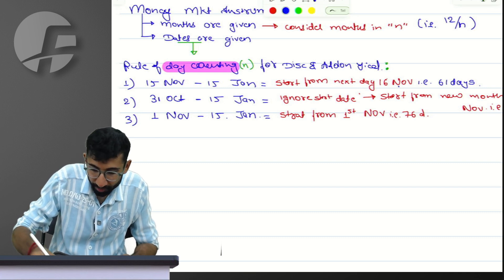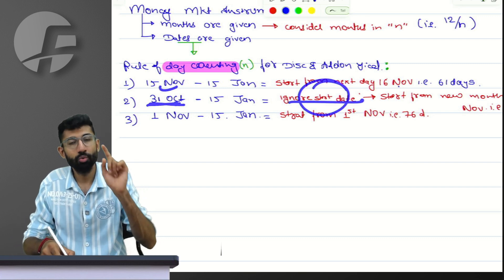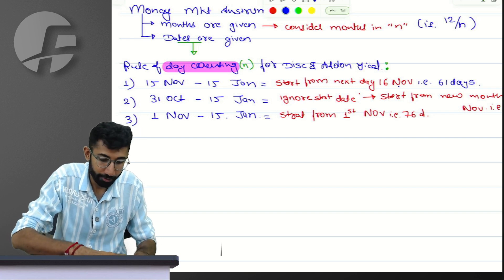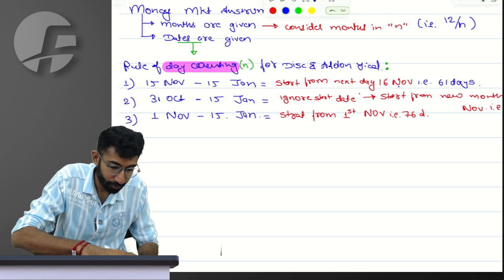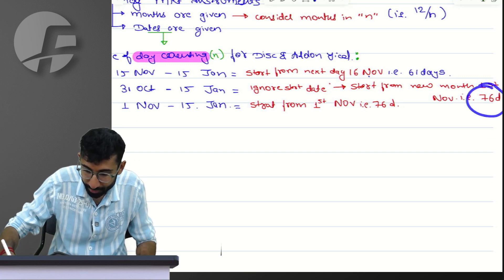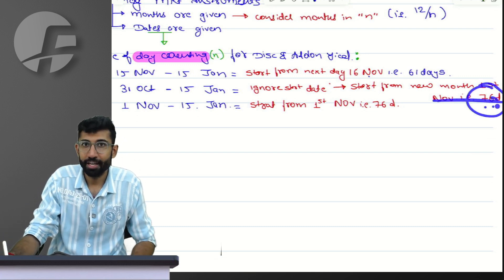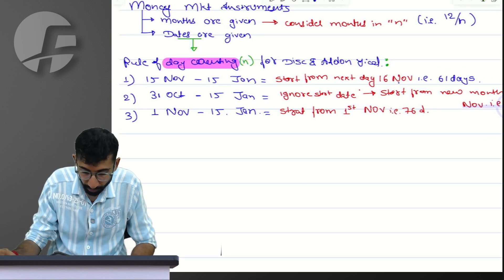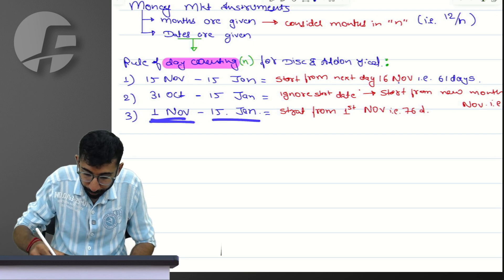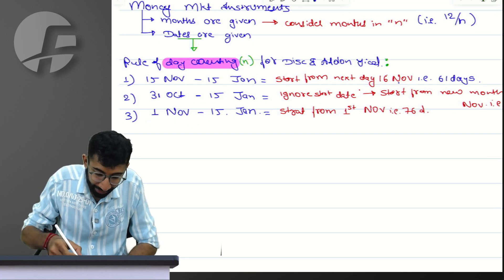I will ignore the start date, which is 31st October, and do the counting from 1st November. So: 30 days of November, 31 days of December, and 15 days of January, which gives me 76 days in total. That is straightforward and easy.